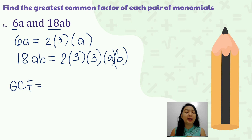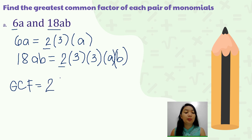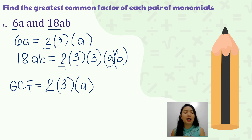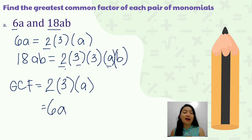To get the GCF, we multiply the factors common to both terms. We have 2, 3, and a — all present in both terms. So that is 2 times 3, which gives us 6a. Therefore, the greatest common factor of 6a and 18ab is 6a.